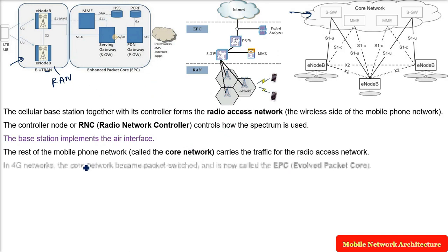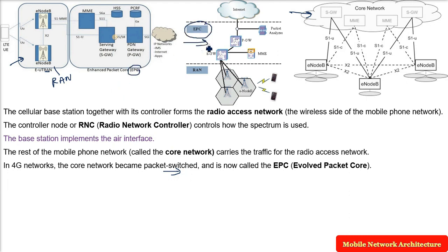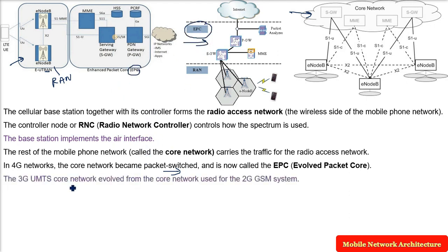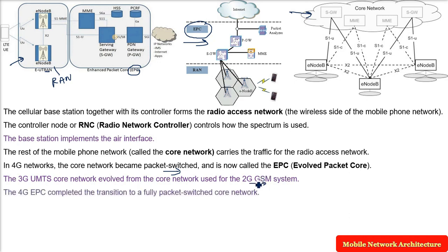In 4G networks, the core network has become packet-switched — that is, data-based — and is now called EPC, Evolved Packet Core. The 3G UMTS core network evolved from the core network used in 2G GSM (Global System for Mobile). The 4G EPC completed the transition to a fully packet-switched core network.